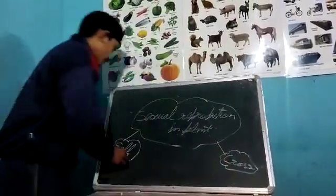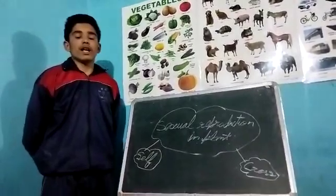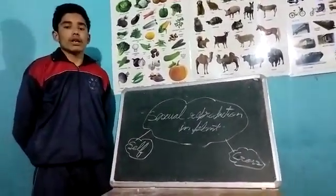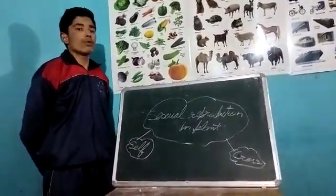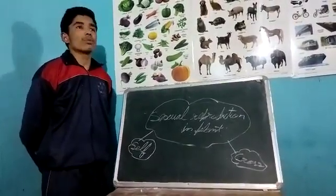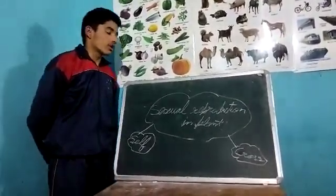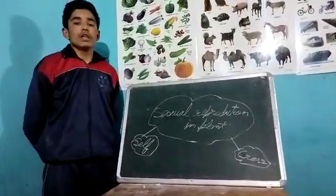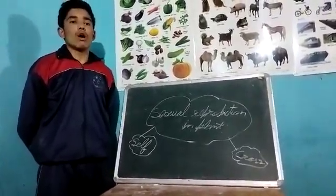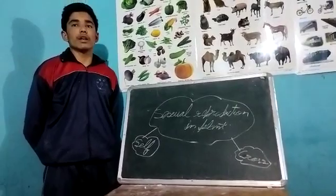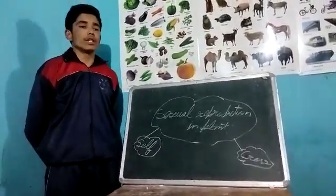So dear friends, self-pollination transports the pollen grain to the stigma from the same flower. Cross-pollination is the transfer of pollen grain to the stigma of another flower.